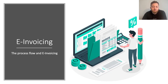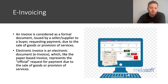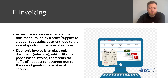In this part, we're going to give information regarding e-invoicing and the current progress in Romania. An invoice is considered a formal document issued by a seller or supplier to a buyer requesting payment due to the sales of goods or provision of services. The invoice is an essential document for trading parties, supply chain, accounting, and tax authorities. An electronic invoice, or e-invoice, is an electronic document which, like the paper-based invoice, represents an official request for payment.